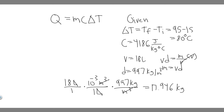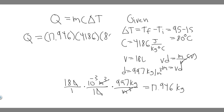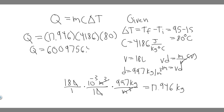Now all we have to do is solve for Q — the heat, how much heat it absorbs. Just plug it in: Q equals our mass, 17.946, multiplied by C, which is 4,186, then multiplied by the change in temperature, which is 80. Go ahead and plug this into your calculator. When you do that, Q — measured in joules — is going to be equal to 6,009,756.48.